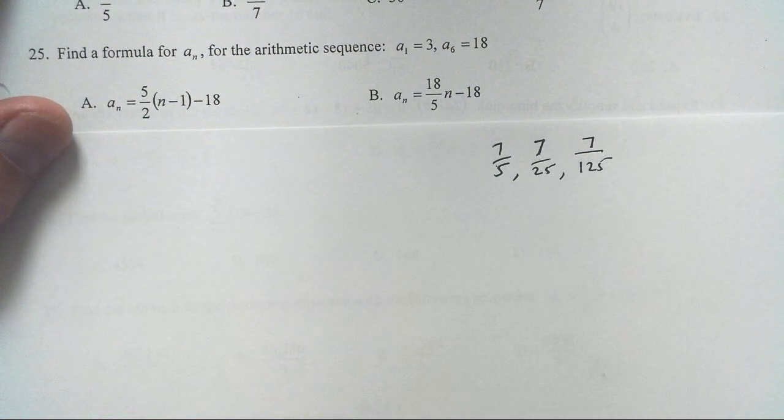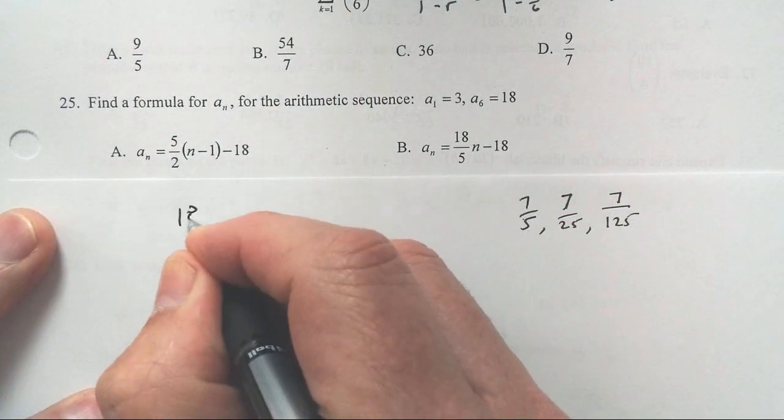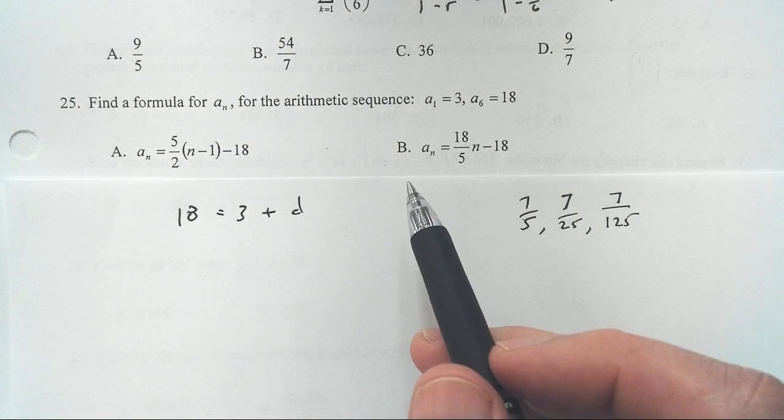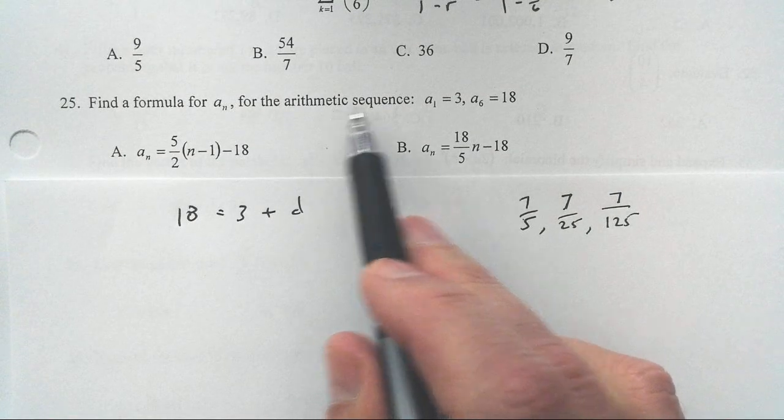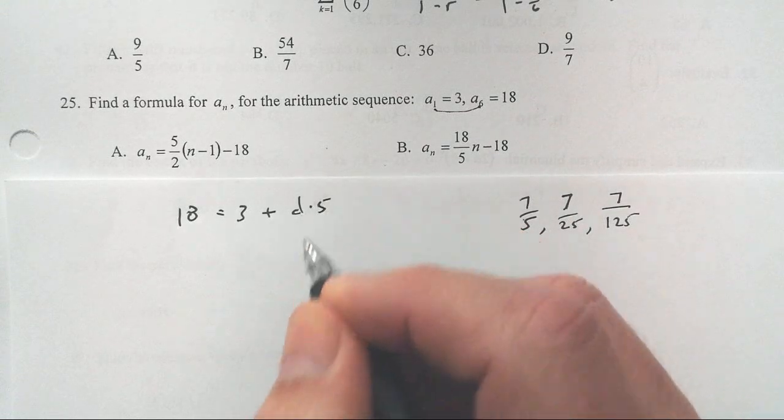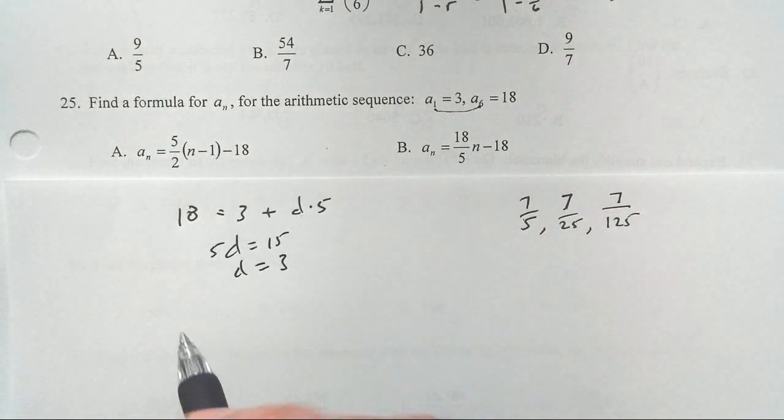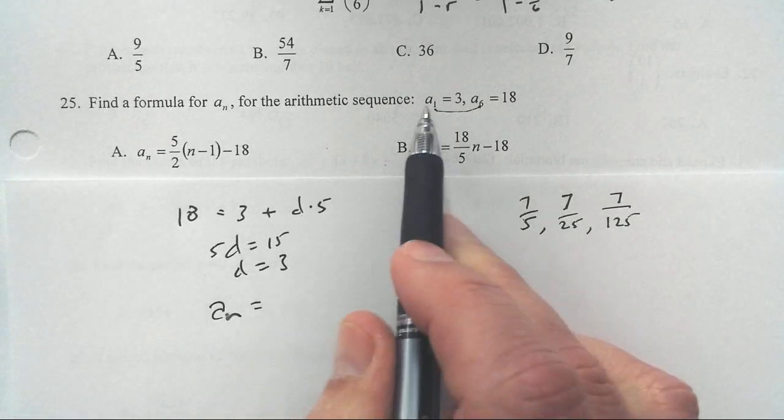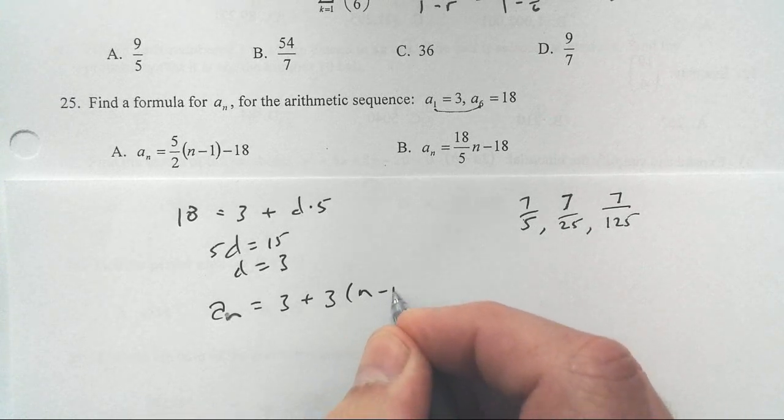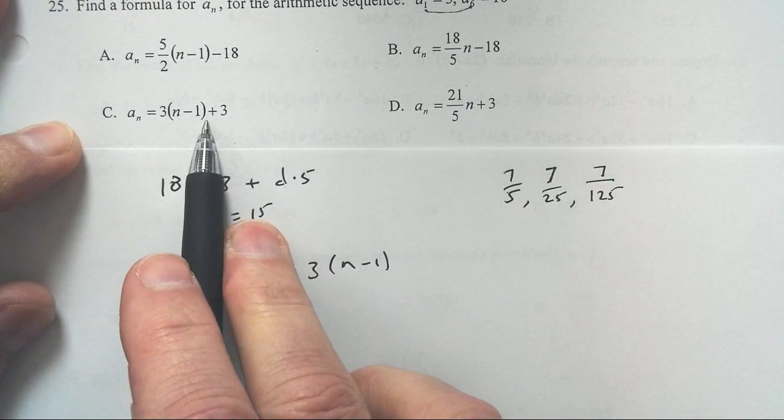Find a formula for the arithmetic sequence where we constantly add by the same amount. So by the sixth term, I make it to 18. I started at 3. I started adding the common difference, which every arithmetic sequence has. How many times do I add the difference? Well, how many steps is it from the first term to the sixth term? It's five steps. So I get 5d equals 15, subtract 3. d is 3. So if I want to get to the nth term, I'm going to start at the first term, 3. I'm going to start adding 3, the difference. How many steps is it to the nth term? n minus 1. I have 3 times n minus 1 plus 3. So C is it.